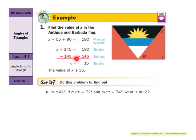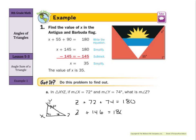Now we'll try a similar problem. In a triangle with angles x, y, and z: if angle x is 72 degrees and angle y is 74 degrees, what is angle z? Following the same setup: z plus 72 plus 74 equals 180. Simplifying: z plus 146 equals 180. Subtracting 146 from both sides, z equals 34 degrees.